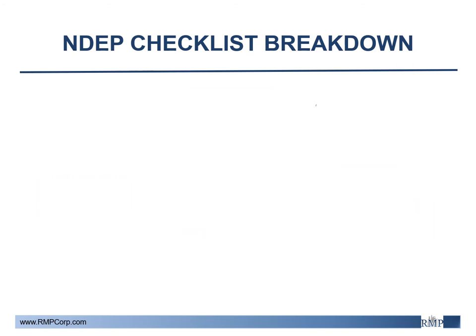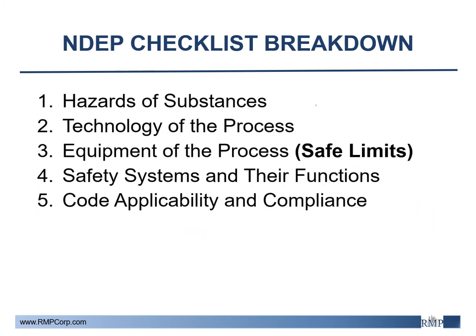The NDEP PSI checklist breaks the program down into five different categories: hazards of substances, which entails specific characteristics and compatibility of the regulated substances; technology of the process and equipment of the process, where details regarding equipment operating limits and design specifications are documented; safety systems and their functions; and code applicability and compliance.